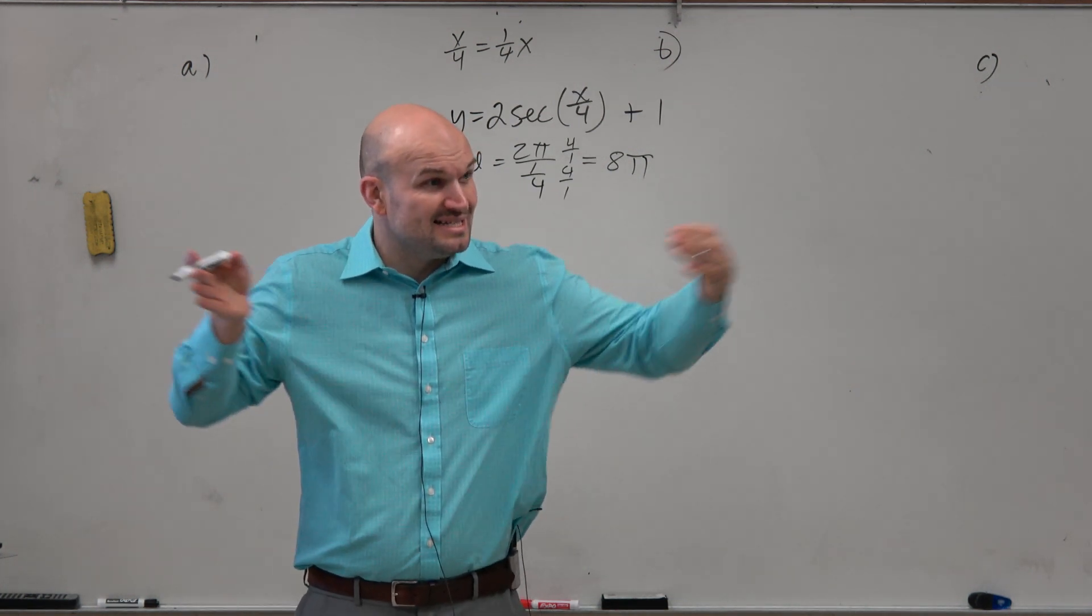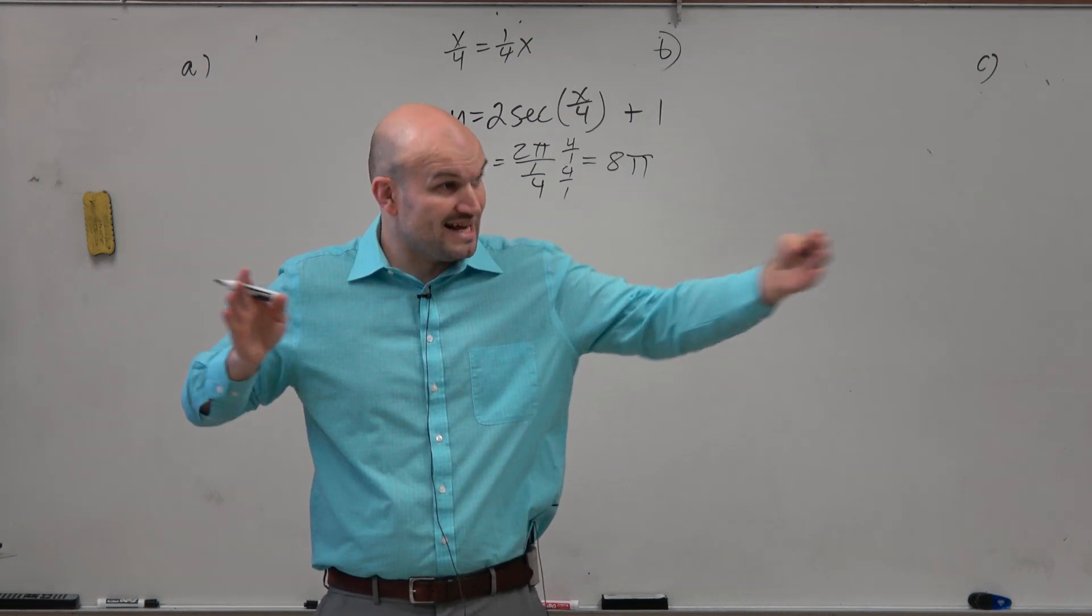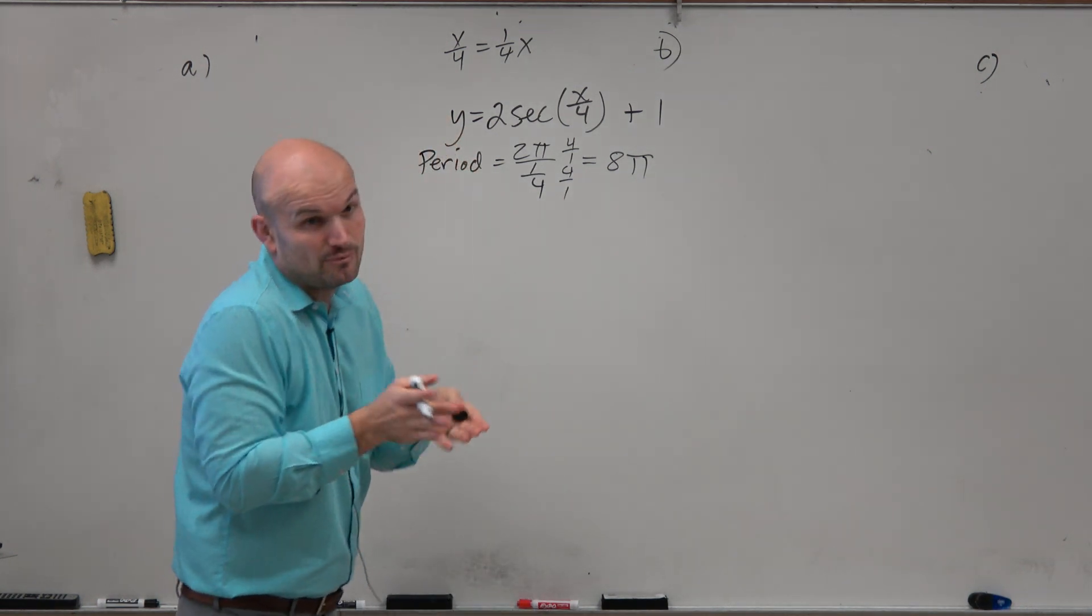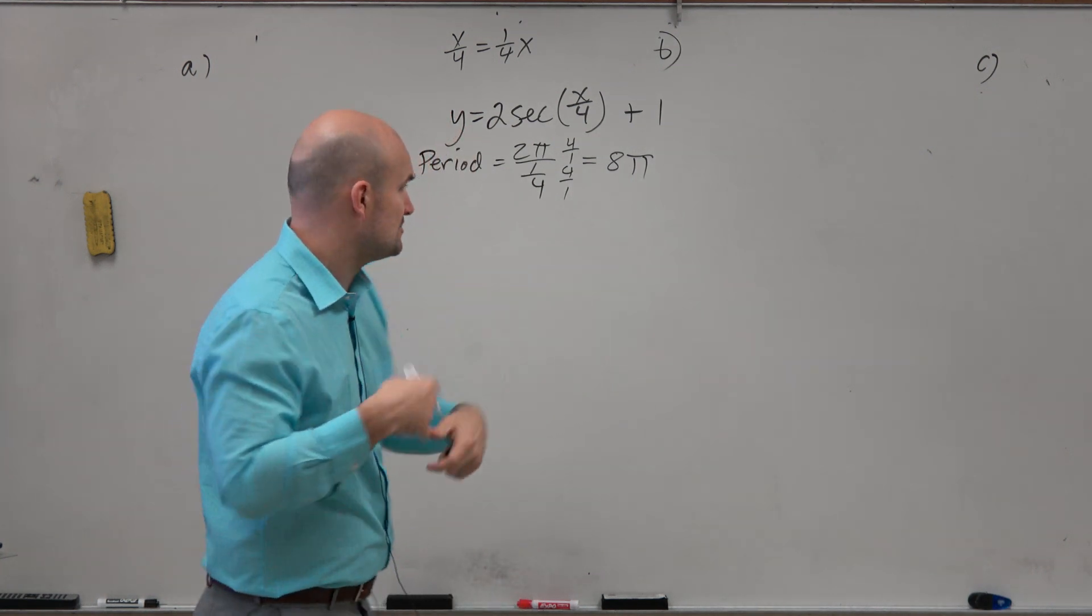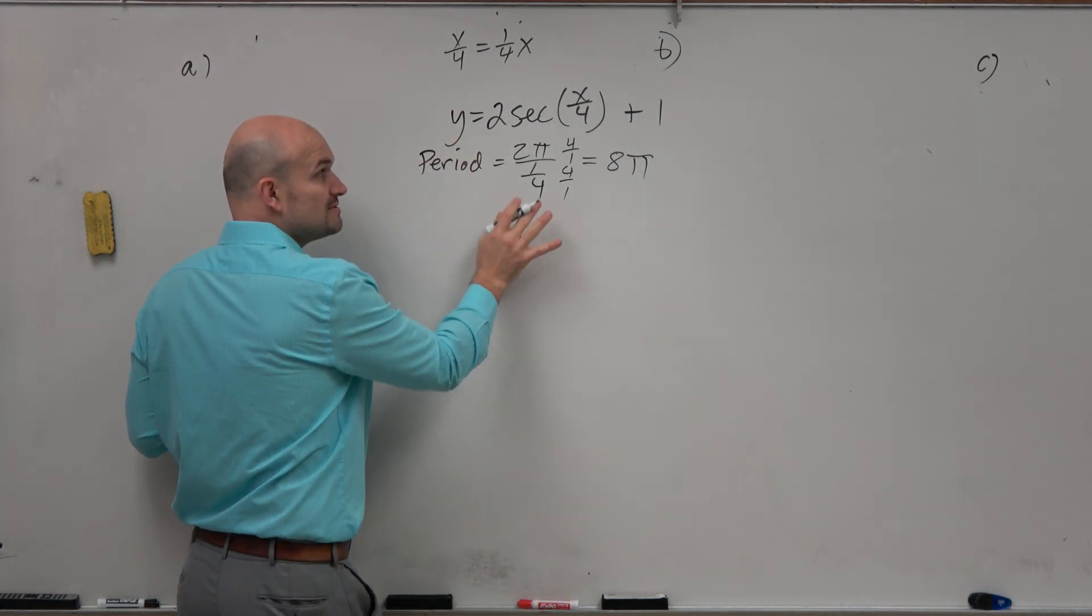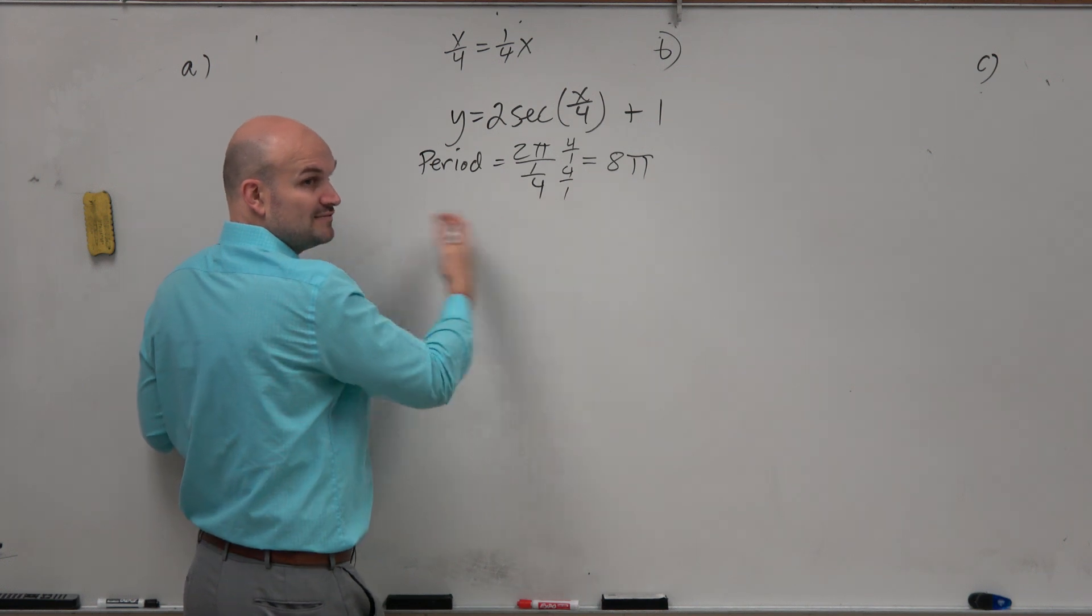What really is what happened? The period went from 2 pi to 8 pi, right? It got horizontally stretched. And again, when we horizontally stretch something, that's going to change those asymptotes. There is no phase shift, right? There's no adding or subtracting shift in left and right.